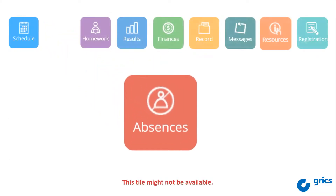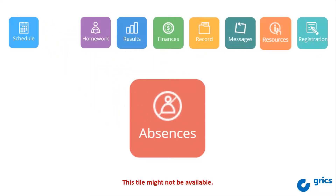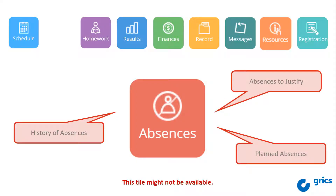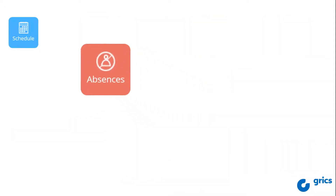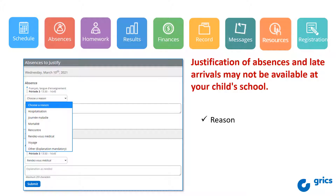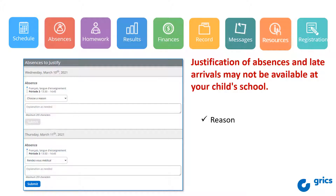If available, the Absences tile allows you to see your child's history of absences. If your child's school allows it, it is possible to justify absences and declare future absences. For each absence to be justified, you must select a reason from the school's choices, explain as needed, then click on the Submit button.